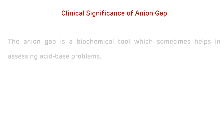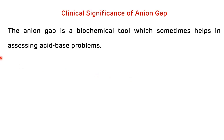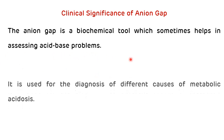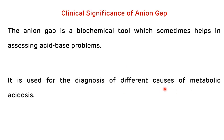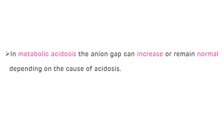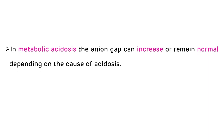Now, the clinical significance of anion gap: anion gap is an important biochemical tool that helps in the assessment of acid-base problems, as well as in the diagnosis of different causes of metabolic acidosis. In metabolic acidosis, the anion gap can increase or remain normal depending on the cause of acidosis.